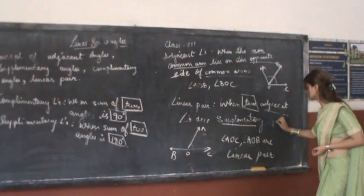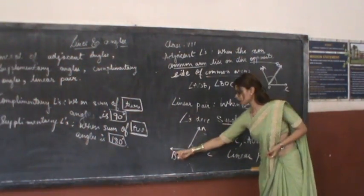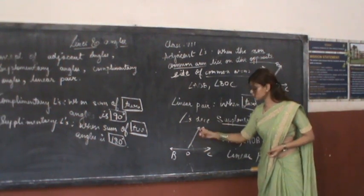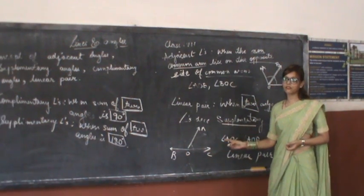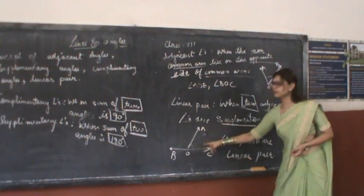then it is called a linear pair. Look at the figure. BOA and AOC, both of them are adjacent with common arm. Non-common arm is lying on the opposite sides of common arm, and both of them are supplementary as it is a straight line.